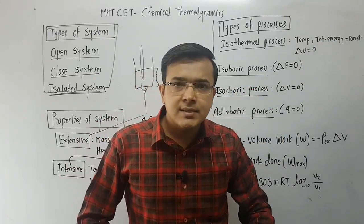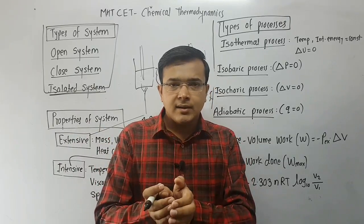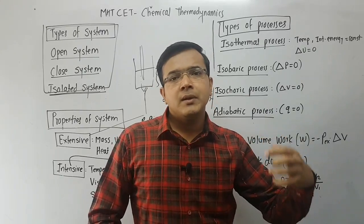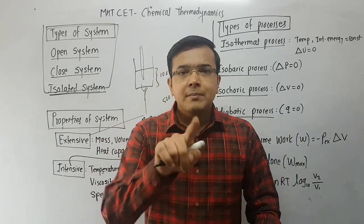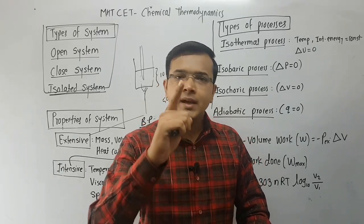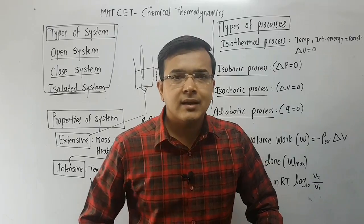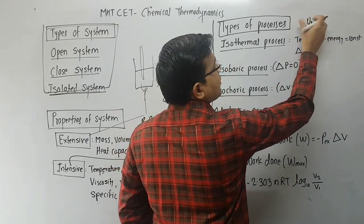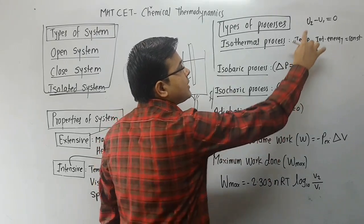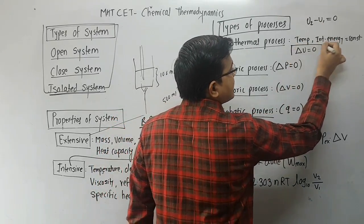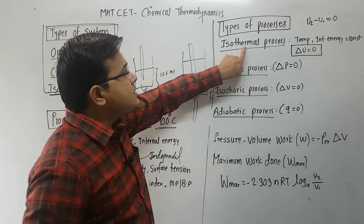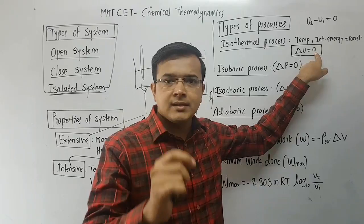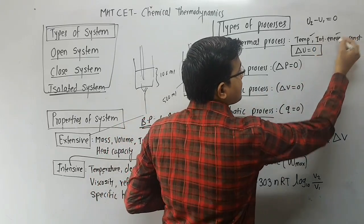If we start the experiment with internal energy U1, and when the experiment is complete the internal energy is U2, and since temperature is constant, the initial and final internal energy are equal. The difference U2 minus U1 is delta U. For the isothermal process, delta U is equal to zero. So three key points: temperature remains constant, internal energy remains constant, and delta U equals zero.